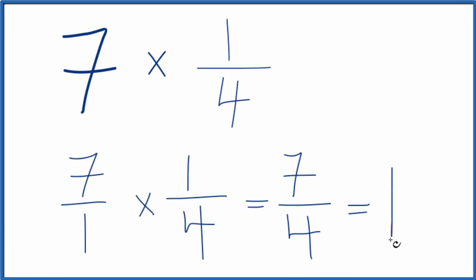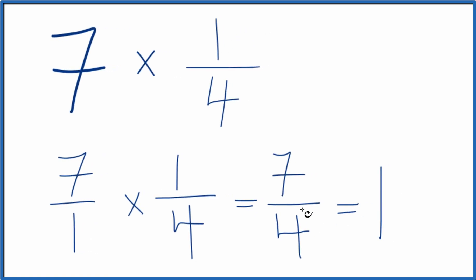4 goes into 7 one time. 1 times 4 is 4. Then we'd have 3 left over. Bring the 4 across. 7 fourths equals the mixed number 1 and 3 fourths.